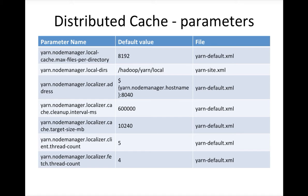You can not only give a local path, you can also give network mount points — but that network mount point should be accessible to all nodes in the cluster. You can also use cloud-based mount points if they are supported with Hadoop, such as Amazon S3 or Microsoft Azure Blob Storage.